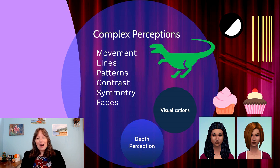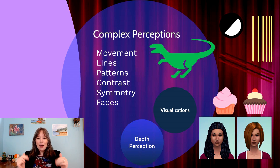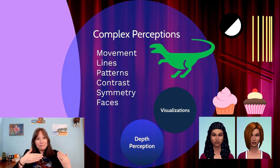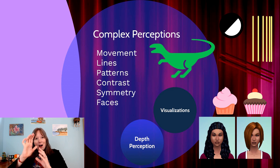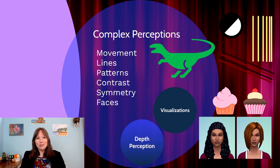Our brain also has many parts dedicated to picking up on faces, even when faces aren't really there. Comparing two illustrated faces: one has high contrast between hair and skin tones and a more symmetrical hairstyle; the other has less contrast and a hairstyle that obscures part of the face. The asymmetrical face requires more brain work — the brain has to estimate what's hidden behind the long bangs. Our brains more efficiently process things with high contrast and symmetry.